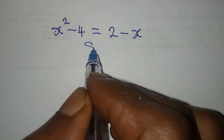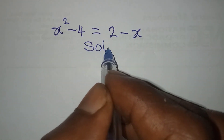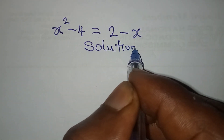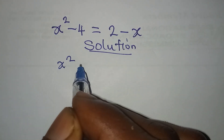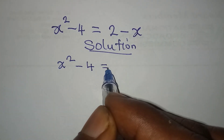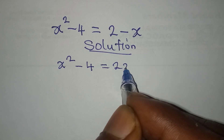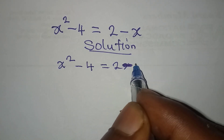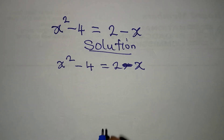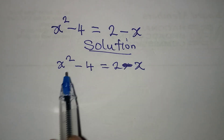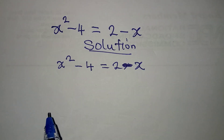Hello everyone, let's solve this problem very quickly. We have x squared minus 4 equals 2 minus x. This looks difficult but it's simple. What we will do is bring everything to the left.